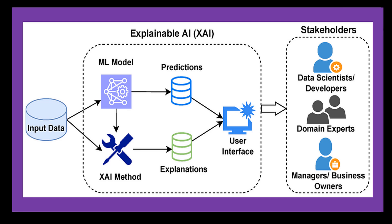In contrast to black-box techniques such as deep neural networks, which are highly complex and difficult to analyze or reverse-engineer, Explainable AI aims to foster more open and collaborative relations between humans and computers, enabling us to leverage the power of AI while preserving our cognitive and democratic capacities.